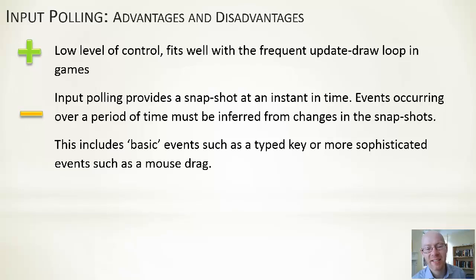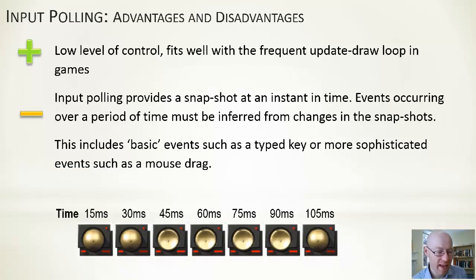A downside is input polling provides a snapshot at a point in time, that's fair enough. And if we have an event that happens over a period of time, for example a drag, we have to detect and track and otherwise recognize that particular event. So a small example at the bottom, the first two images on the left, the button's up, then the button gets to be pushed down for four frames, then it pops up back in the fifth frame.